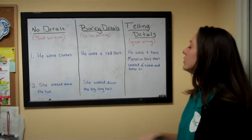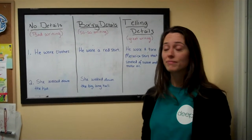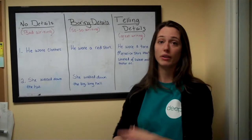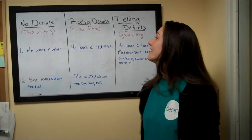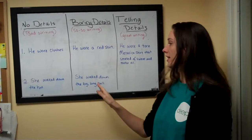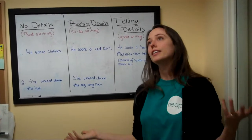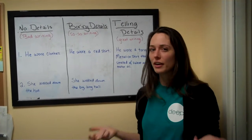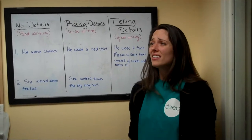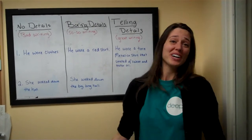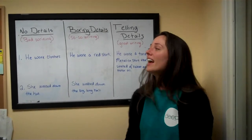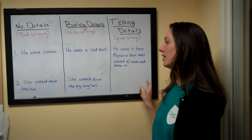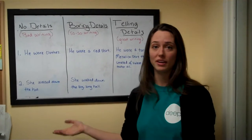After you do it yourself once, have your kids help you with an example. You would say, 'She walked down the hall' — that has no details. We don't know anything about the hall or who she is. Then show them a boring detail: 'She walked down the big long hall.' Ask what that tells us, and they wouldn't be able to give very interesting answers — maybe just 'the hall's big' or 'the hall's long.' Then have them brainstorm for 30 seconds about a telling detail that tells you about this woman or the hall.